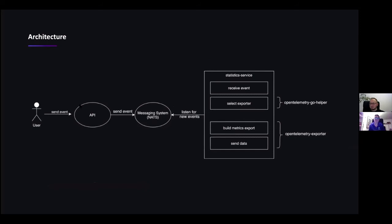Let's talk about the architecture of our sample use case. At first, there is a user who sends an event to Captain, such as 'I want to create a project.' Afterwards, the Captain API sends an event to the messaging system, which is NATS — also a CNCF project. And there is our statistics service which listens for new events on this messaging system.